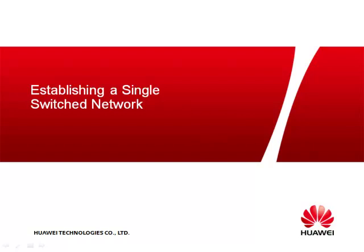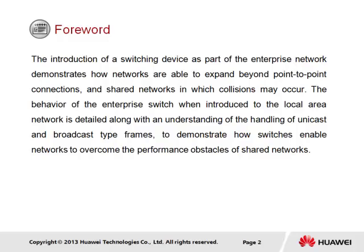This section focuses on establishing a single-switch network as part of enterprise network expansion. The introduction of a switching device demonstrates how networks are able to expand beyond point-to-point connections and shared networks in which collisions may occur. The behavior of the enterprise switch when introduced to the local area network is detailed, along with an understanding of the handling of unicast and broadcast-type frames to demonstrate how switches enable networks to overcome the performance obstacles of shared networks.